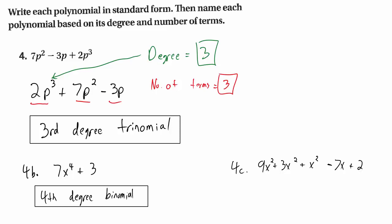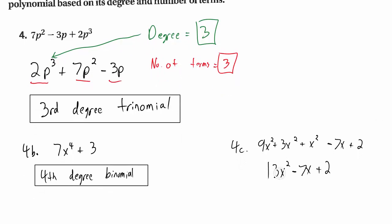Once you get past trinomial for 3 terms and binomial for 2 terms, you just say how many terms there are. But this example does not actually have 5 terms. Can you tell why? Because you can simplify it: 9x², 3x², and the implied 1x² combine — 9 plus 3 is 12, plus 1 is 13. So this simplifies to 13x² − 7x + 2, making it a second degree trinomial.